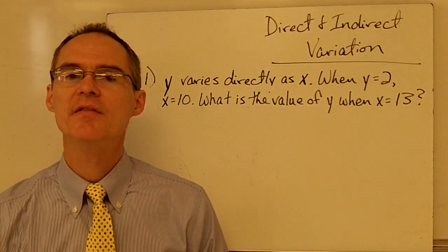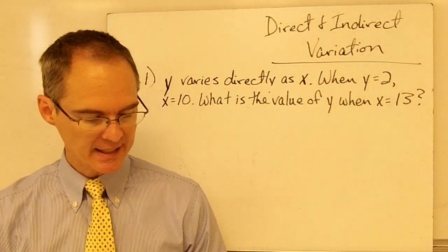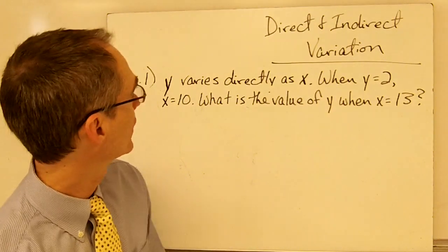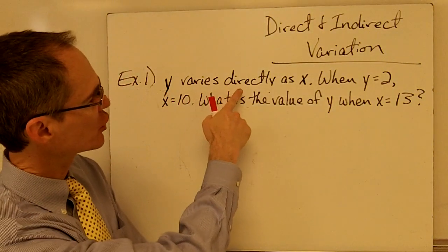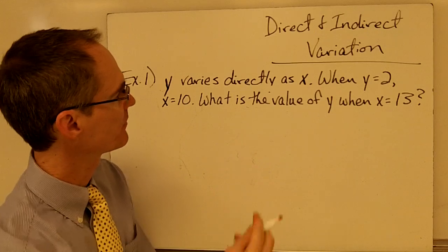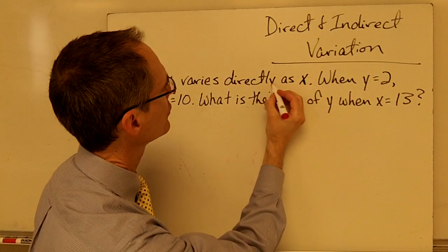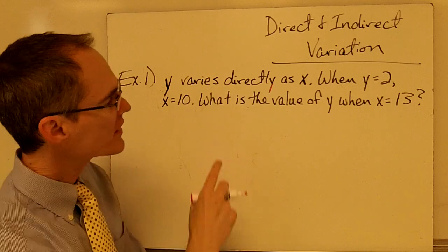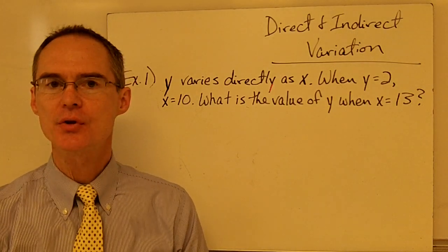This video is on direct and indirect variation problems. Take a look in your notes there at example number one. It says y varies directly as x when y equals 2, x is equal to 10. What is the value of y when x equals 13?